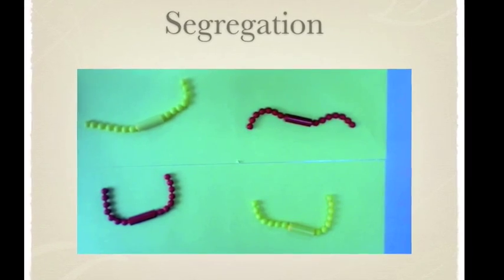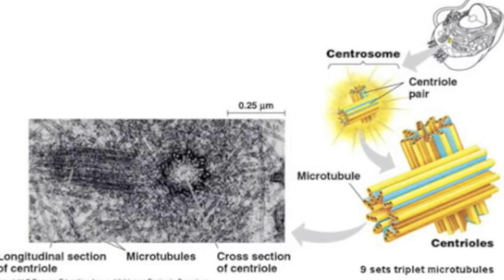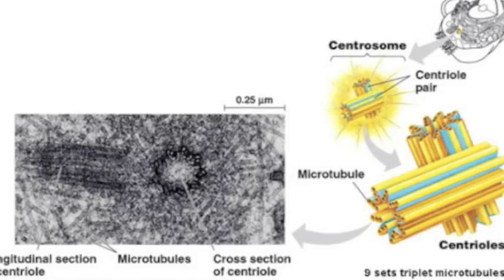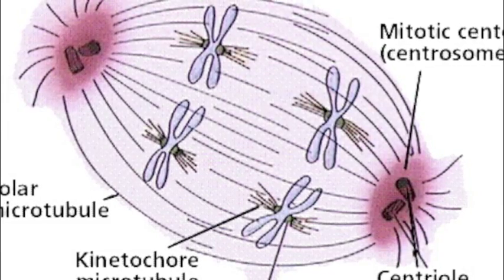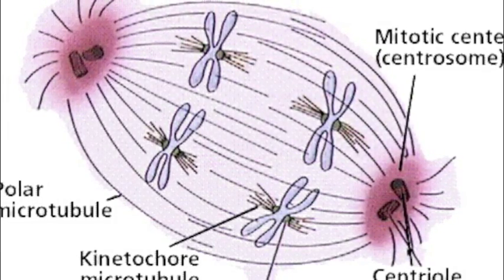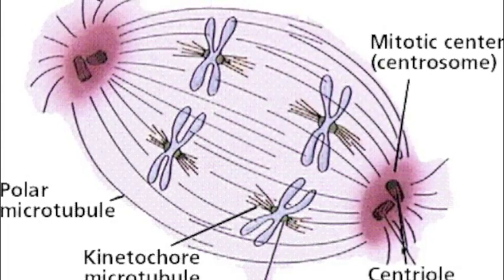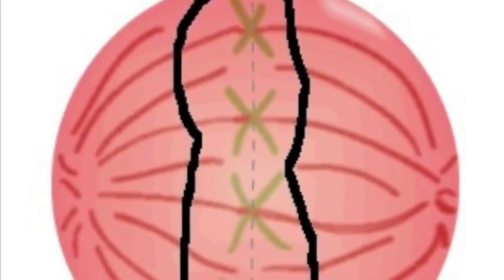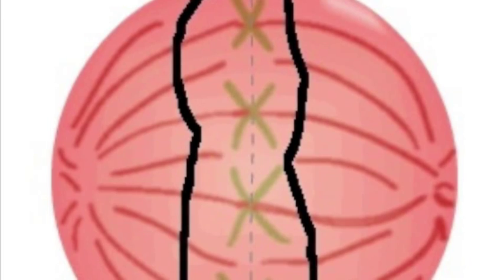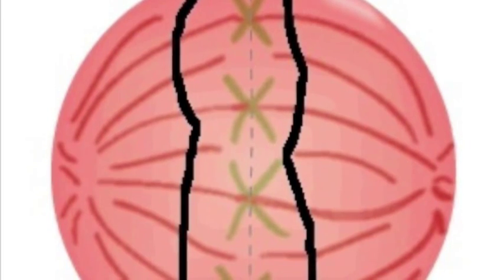The centrosomes also move, spindle fibers start forming, and the nuclear envelope disappears just like in mitosis. Microtubules from one pole attach to kinetochores, the protein structures at the centromeres, as they move towards the metaphase plate. Also during prophase 1, tetrads form.